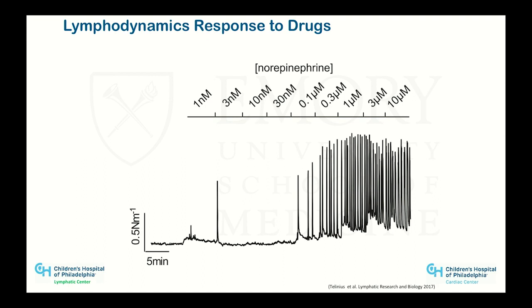Norepinephrine is another example. This shows pulsations of lymphatic ducts — in a dose-dependent manner, at a certain point lymphatic channels start to pulsate very quickly and will contract. So they respond to these hormones.